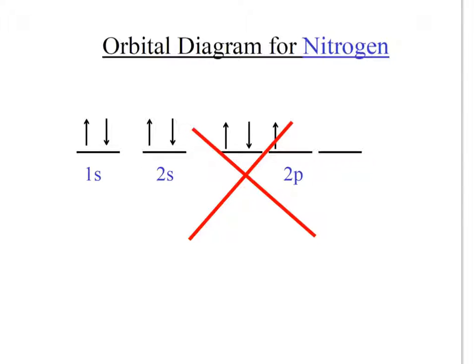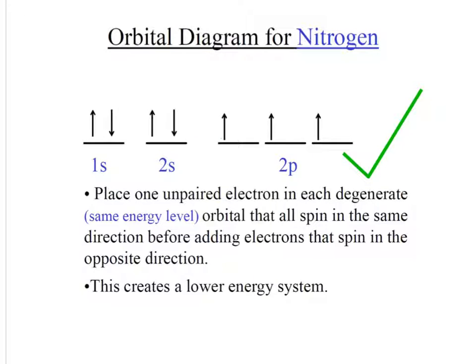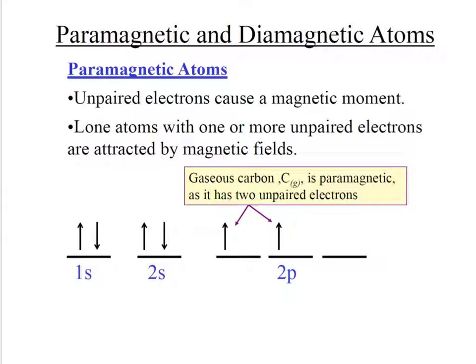For nitrogen, this is not nitrogen because you have to go up, up, up. They don't pair up until they have to. They're negative. They repel each other. They don't want to be next to each other.